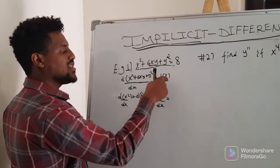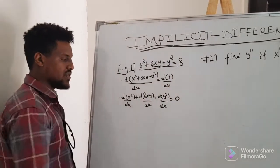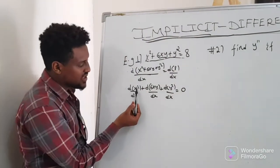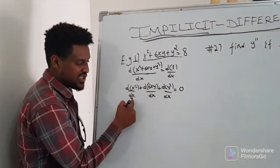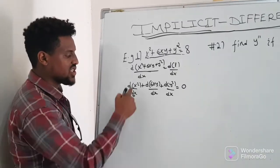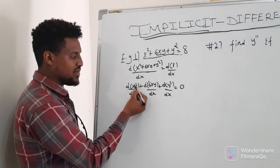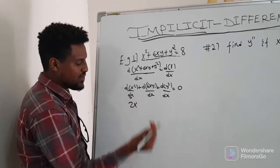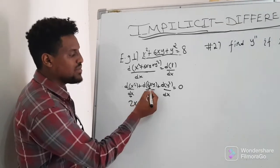And if y squared equals a constant, then that term equals 0. The derivative of x squared is 2x. So we have 2x to work with, plus the product rule term from 6xy.